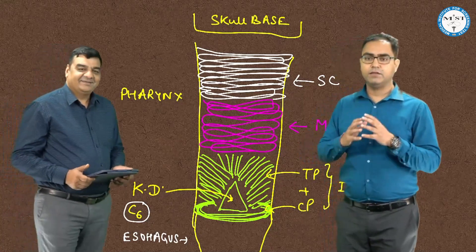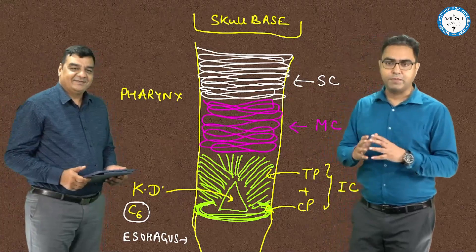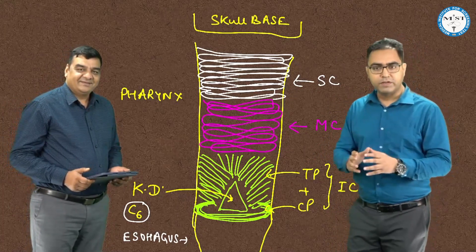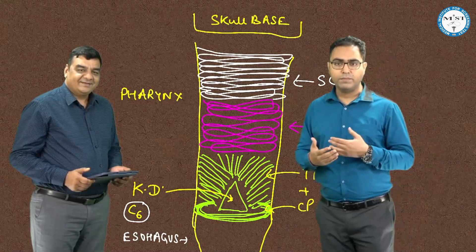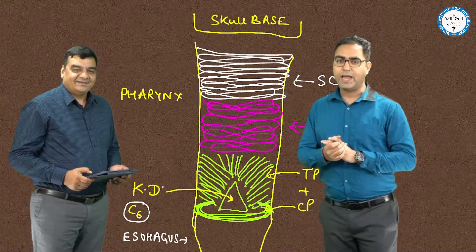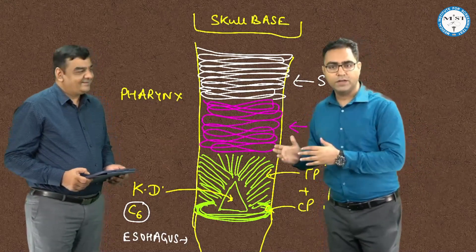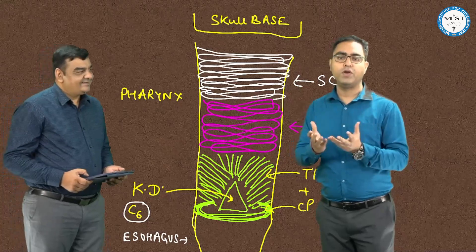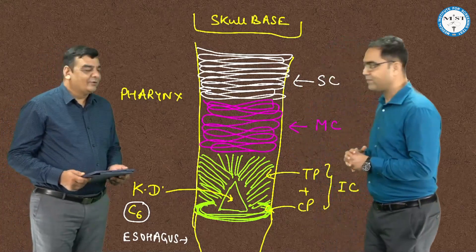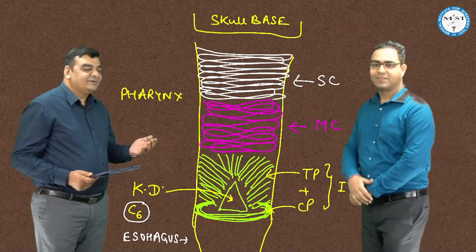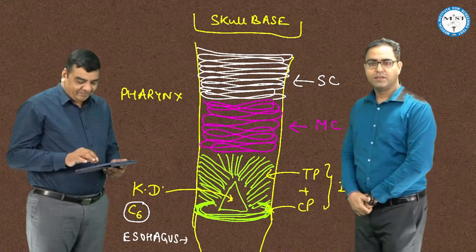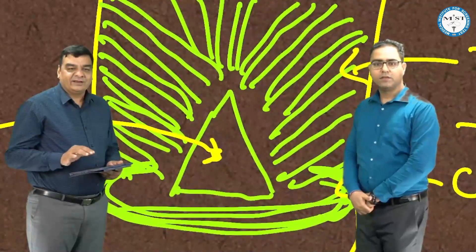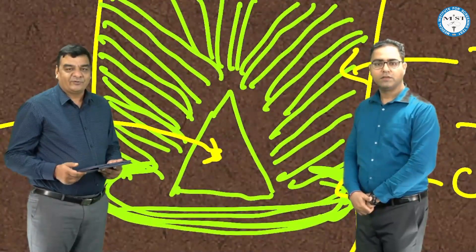The second clinical anatomy point is that Killian's dehiscence is a possible site of Zenker's diverticulum, also called pharyngeal pouch. I will request Vinit sir to lay stress on the clinical story of the pharyngeal pouch. Thank you so much Rajiv sir, and how nicely sir has explained this natural weakness in the form of Killian's dehiscence.